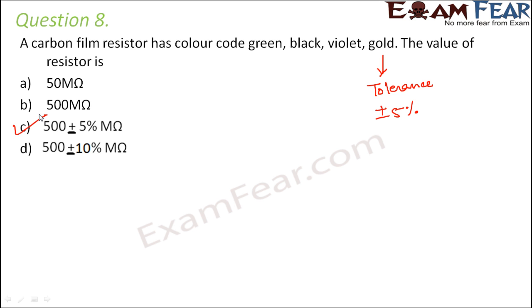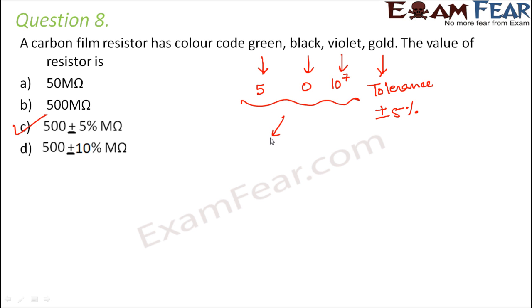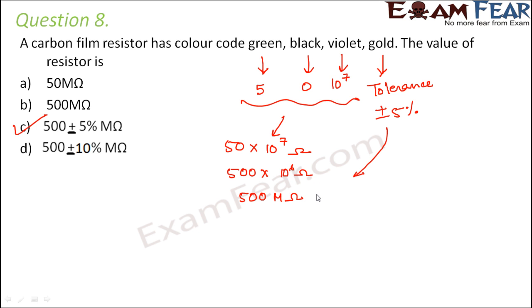Even without that shortcut, we can calculate the full value: green = 5, black = 0, violet = 10⁷ (multiplier). So the resistance is 50 × 10⁷ ohms, which equals 500 × 10⁶ ohms, or 500 megaohms. With gold indicating ±5% tolerance, the answer is 500 ± 5% megaohms, confirming option C.